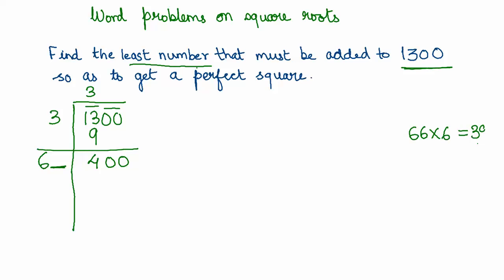That is what comes closest to 400. So we say 66 multiplied by 6 gives us 396, and the remainder is 4. Now here comes the interesting bit: 1300 is not a perfect square because we have a remainder.